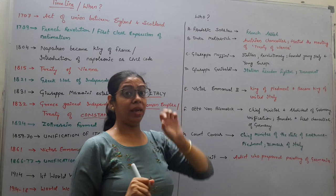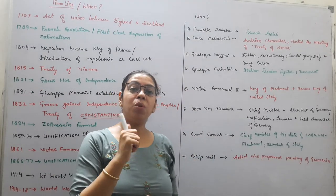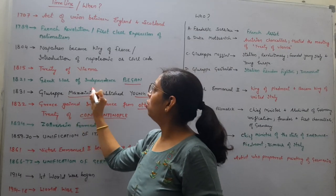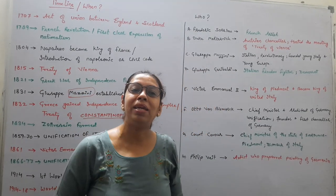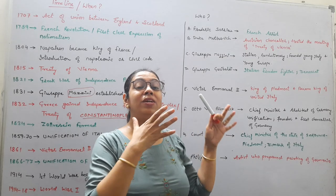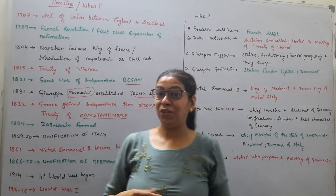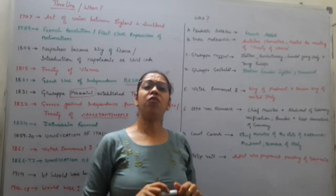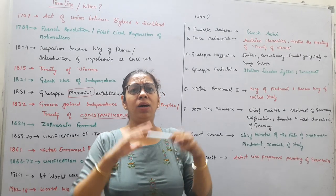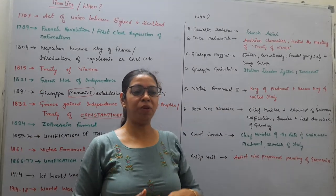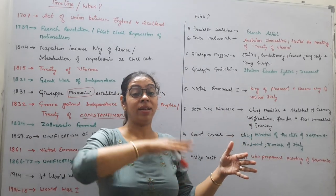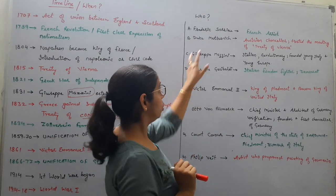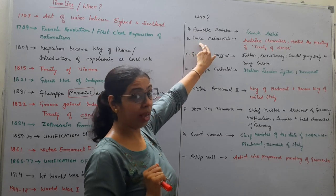Metternich gave two very famous quotes you should all know. Number one: he called Mazzini the most dangerous enemy of their social order. Secondly, he said: when France sneezes, the whole of Europe catches cold. This quotation helps us understand how much France's events affected Europe. Both quotations were given by Metternich.